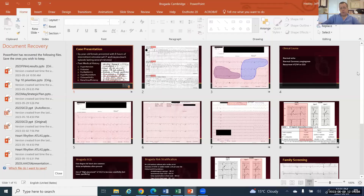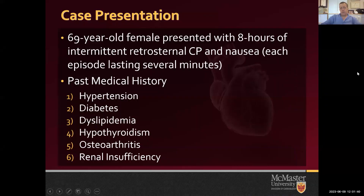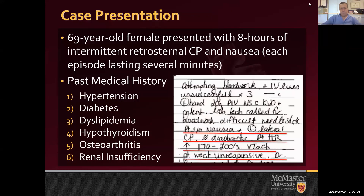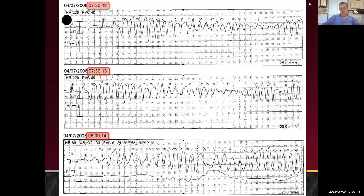We'll start with a case — I always like case-based rounds. A 69-year-old female presents with eight hours of intermittent retrosternal chest pain and nausea, coming in waves lasting about three to four minutes at a time. She has typical cardiovascular risk factors: overweight, hypertension, diabetes, and a bit of renal insufficiency. On presentation her heart rate is 170 to 200 beats per minute and she gets dizzy.